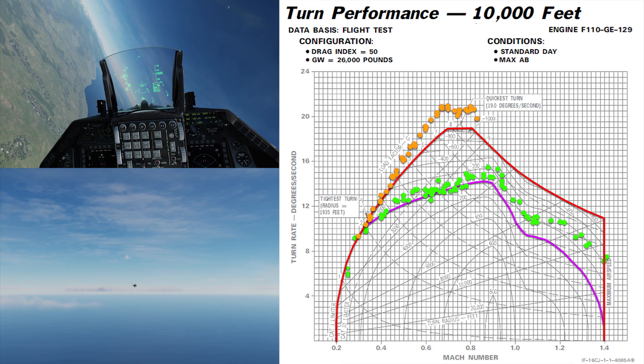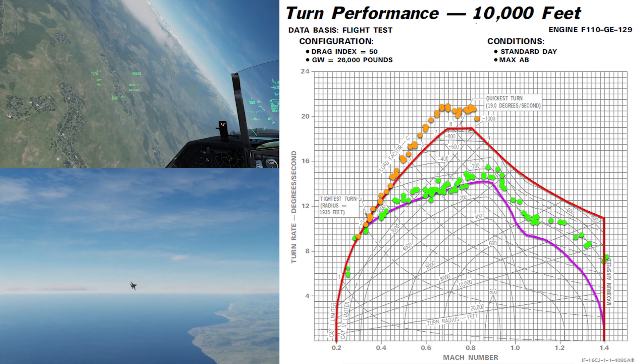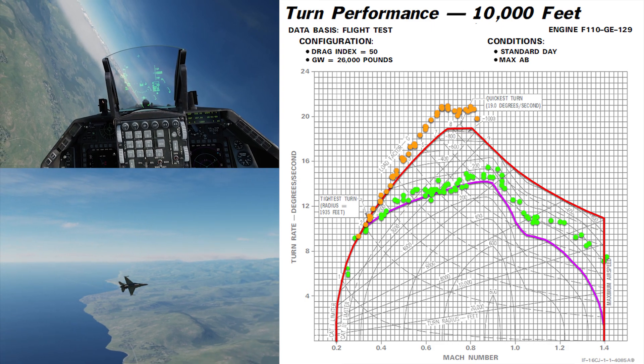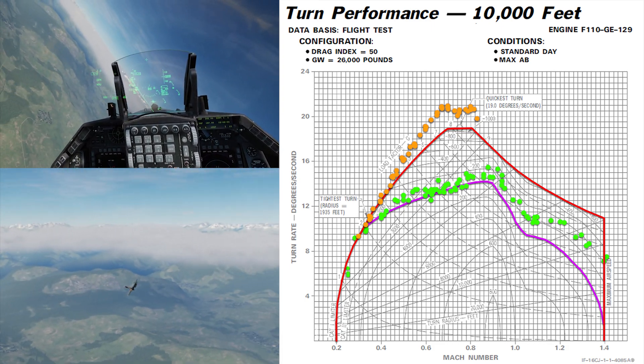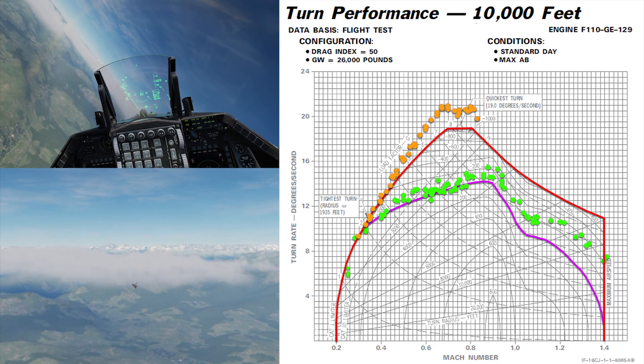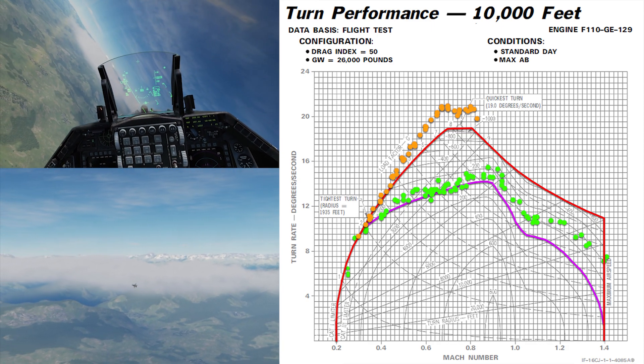There's no point to testing instantaneous above Mach 0.8 because basically you're in the blackout zone. It's not like you're going to get any extra performance, you're just going to black out.